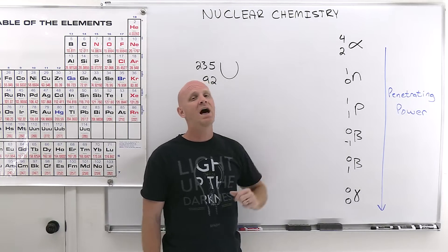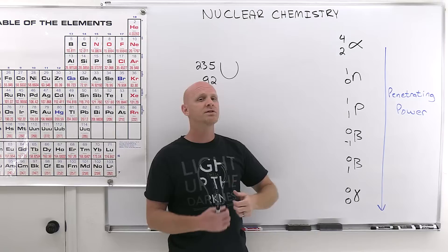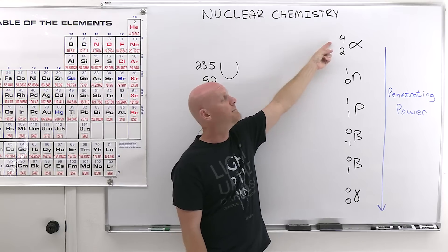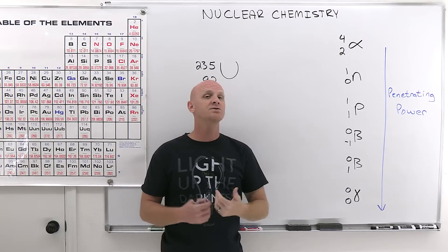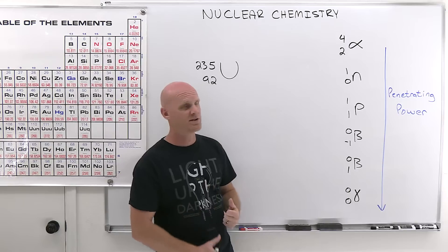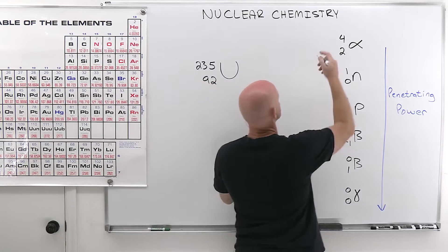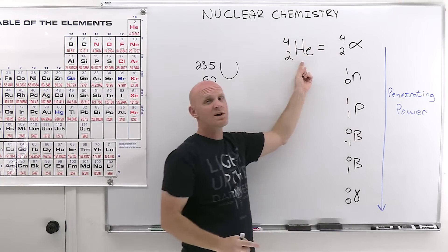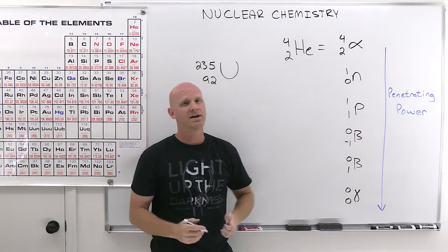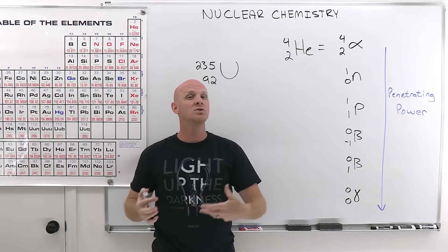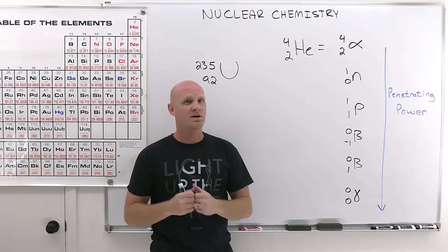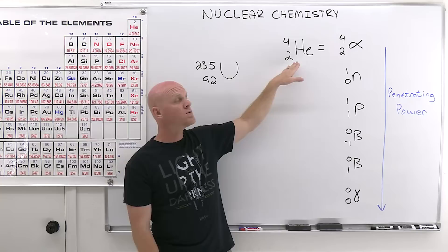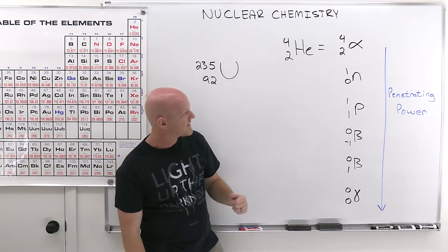This next one might be new — this is an alpha particle. An alpha particle is composed of two protons and two neutrons, so it's got an atomic number of two and a mass number of four. It turns out an alpha particle is the equivalent of a helium nucleus — not a helium atom. The difference is the electrons: an alpha particle does not have any electrons, whereas a helium atom would. A helium nucleus does not, so that's why it's the equivalent of the nucleus.